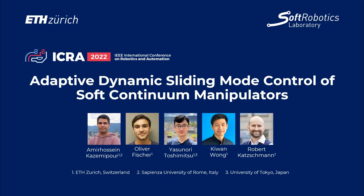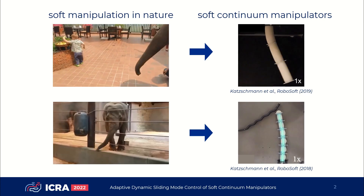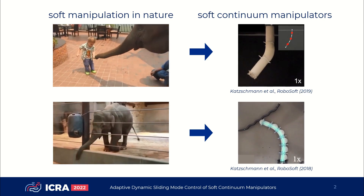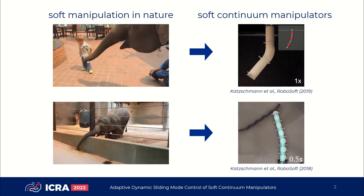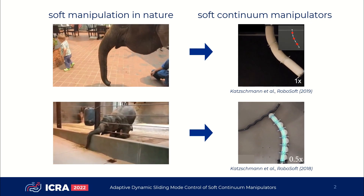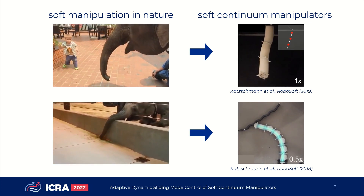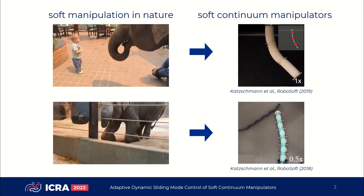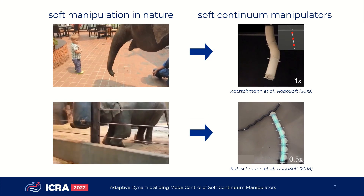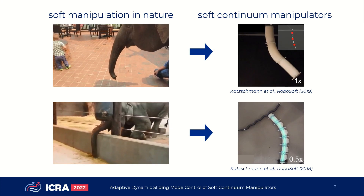Hello everyone, my name is Amir Hossain and I'm going to present our work about adaptive dynamic sliding mode control of soft continuum manipulators. Today we can design and build soft robotic arms that can perform continuously like an elephant's trunk to provide a wide range of motions, and the goal of this work is to figure out how we can control these robots as effectively as possible.